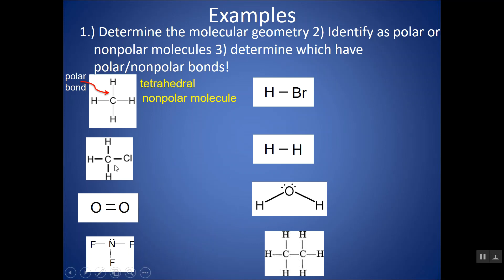Let's go to the next one. This carbon has one, two, three, four domains around it — four places I find electrons, whether in a bond or a lone pair — so this is tetrahedral as well. However, this would be a polar molecule. They are not surrounded by all the same atom. This chlorine would pull a little harder on electrons, so I would have a slight negative charge on this chlorine, and there would be oppositely charged ends. This is asymmetrical — there's a Cl on this side and H on this side — so it's a polar molecule, with polar bonds.